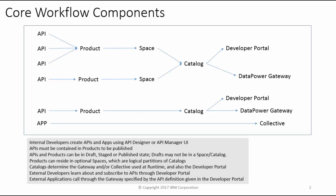An API Connect workflow consists of some core components, which we will review before getting into greater detail. As you can see here, the core workflow components consist of API and app drafts, product drafts, spaces, catalogs, the developer portal, the DataPower gateway, and a collective. We will now walk through each of these and show you how they work together to create a workflow.